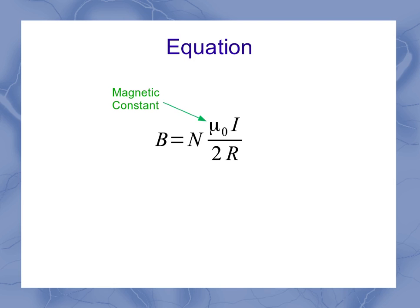The mu naught up here on top is our magnetic constant. The I is our current. The R is the radius of our loop, and N is the number of loops. Sometimes you'll see this equation without the N, which means they assume it's just a single loop of wire forming a circle.